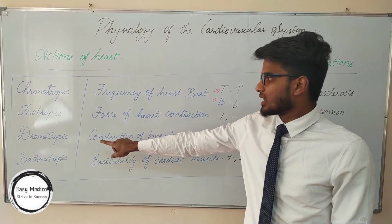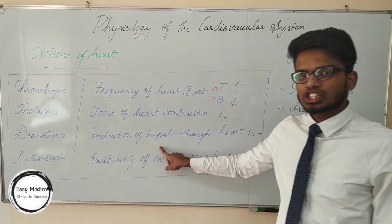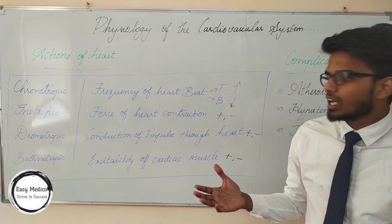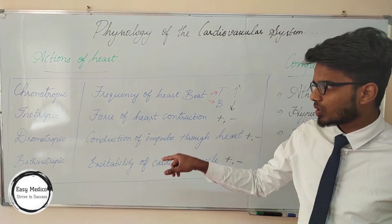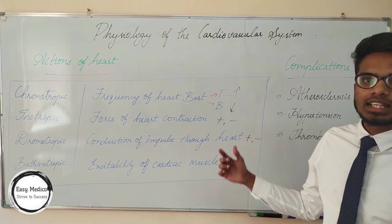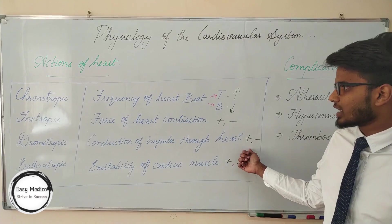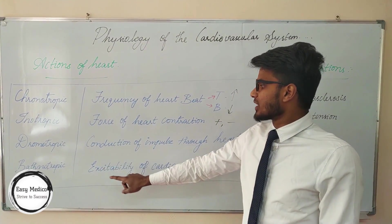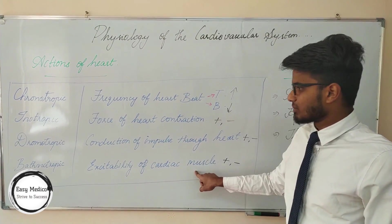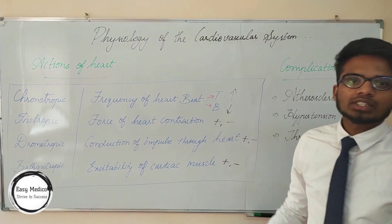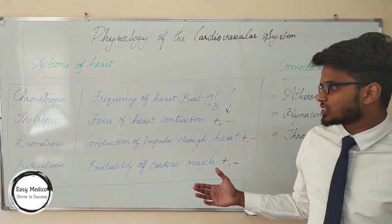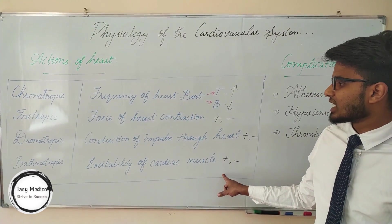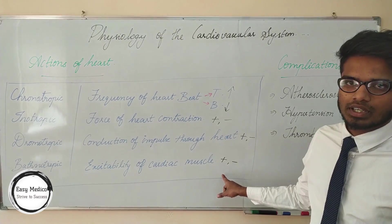Dromotropic action depends on the conduction of impulse through the heart — more conduction leads to positive dromotropy, and less conduction leads to negative dromotropy. Bathmotropic action depends on the excitability of the cardiac muscle — more excitation leads to positive bathmotropy, and less excitation leads to negative bathmotropy.